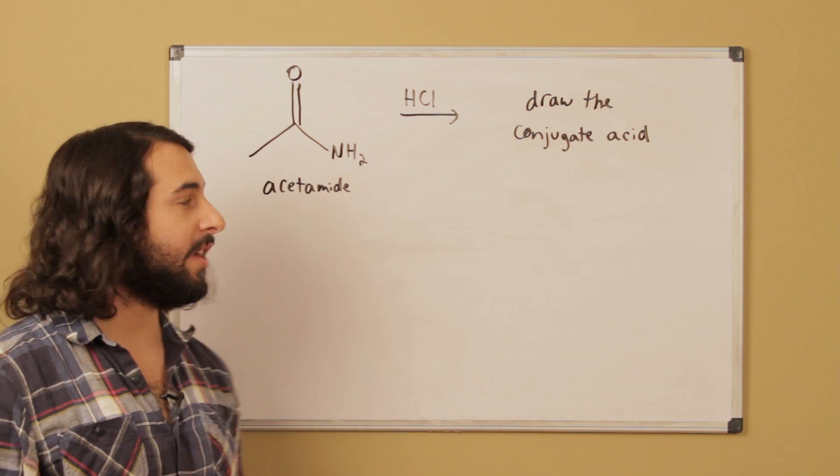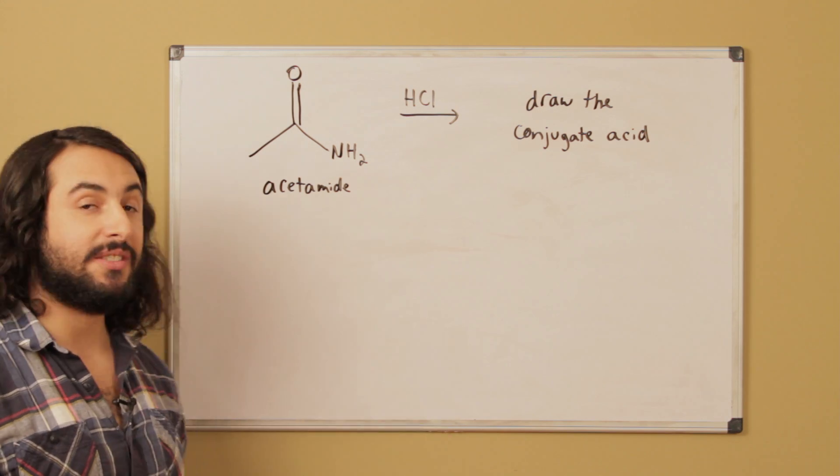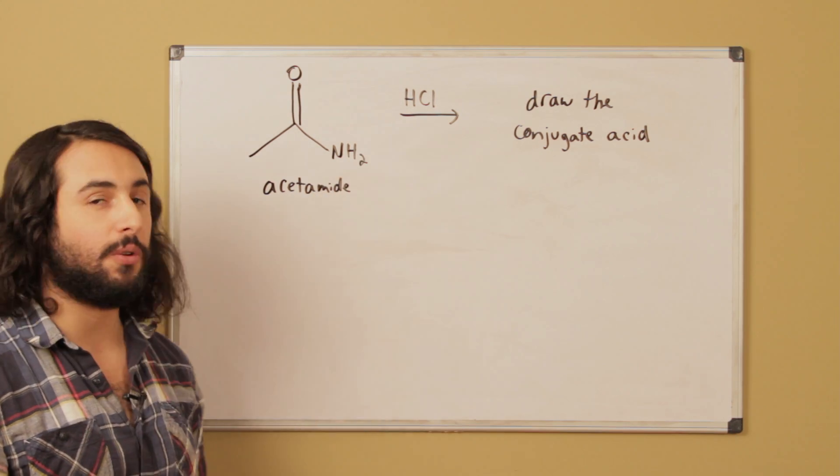Hey guys, for today's problem, this molecule is called acetamide, and acetamide is a weak base, so it can react with a strong acid. If it reacts with hydrochloric acid, which is a strong acid, we want to draw what is going to result.